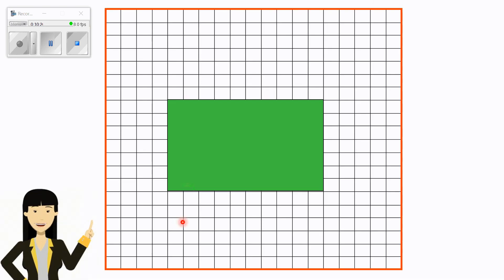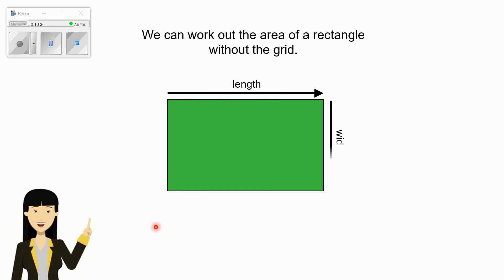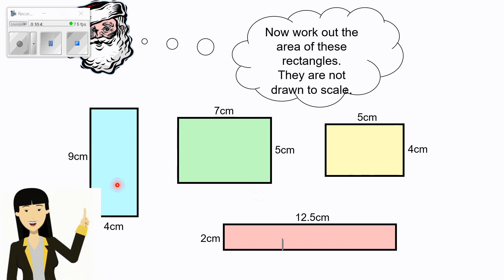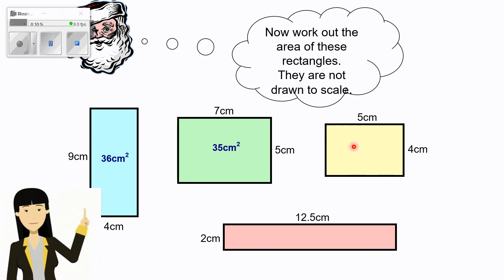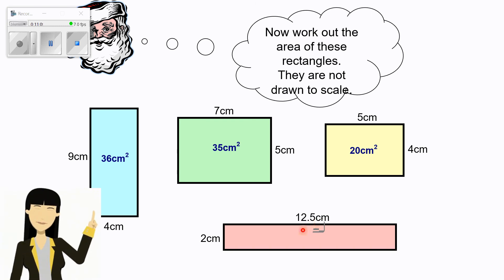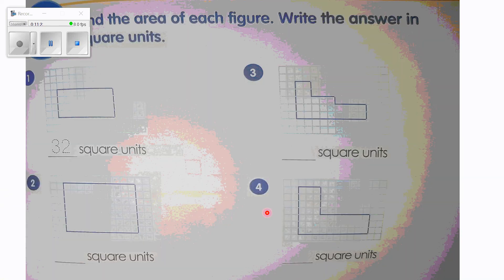Now you can work out the area of a rectangle without a grid. Without grid paper, how do I find it? Yes — the formula: length times width. For example, 4 times 9 equals 36 square centimeters. Seven times five equals 35 square centimeters. Five times four equals 20 square centimeters. And 12 times 2.5 equals 25 square centimeters — just double 12 to get 24, and add for the half.